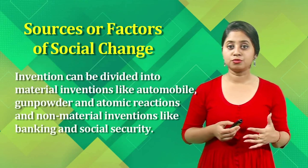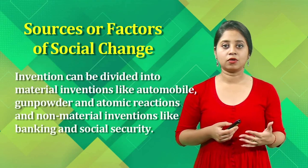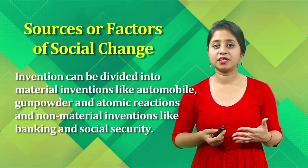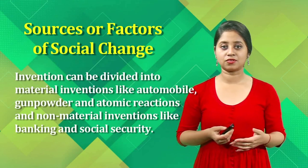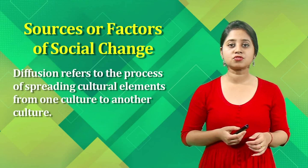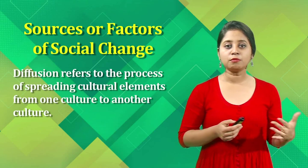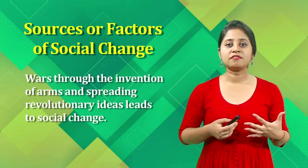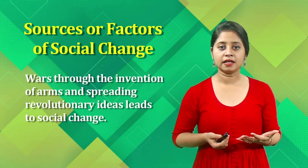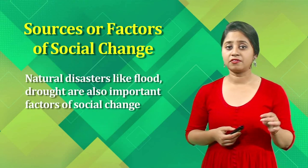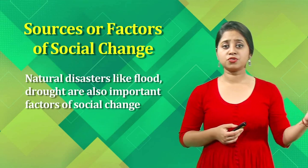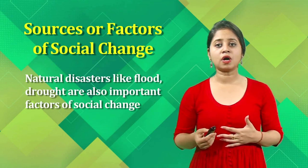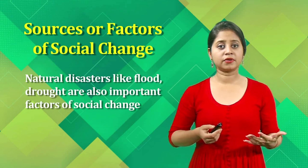Invention can be divided into material inventions — like the automobile, gunpowder, atomic reactions — and non-material inventions like banking and social security. Diffusion refers to the process of spreading cultural elements from one culture to another. Wars, through the invention of arms and spreading of revolutionary ideas, lead to many social changes. Natural disasters like floods and droughts are also important physical factors in bringing about social change.